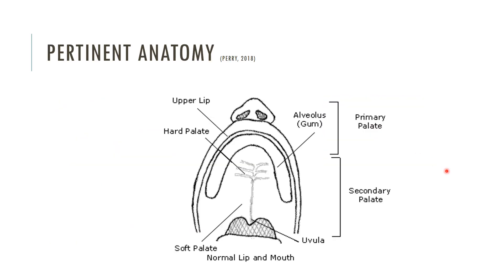In cleft palate, the palate is described differently than in articulation. In articulation, we divide it into the alveolar ridge, the hard palate, and the soft palate. In cleft palate, we divide it into the primary palate and the secondary palate. The primary palate is from the very front — just in front of the teeth — all the way back to just behind the alveolar ridge, essentially the first four teeth in the front. Everything behind that is the secondary palate, all the way down to the soft palate.